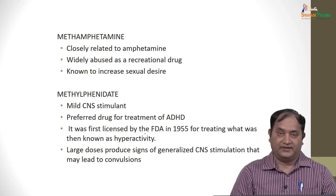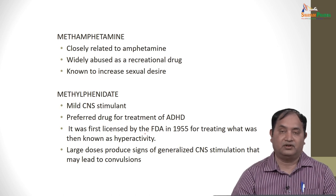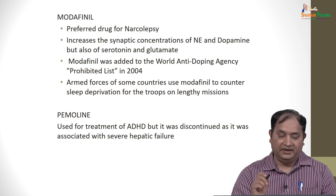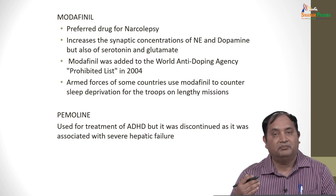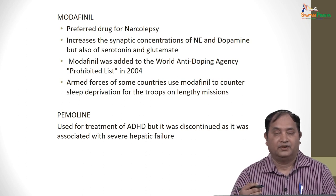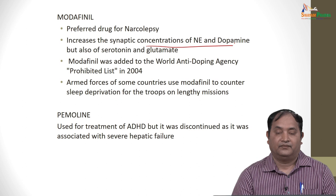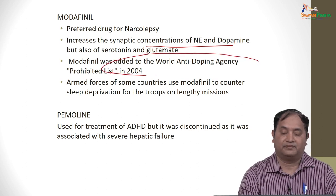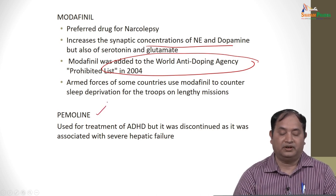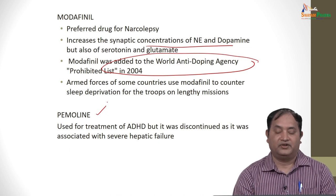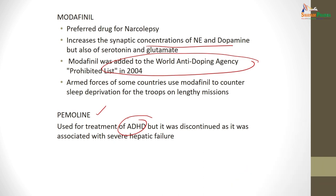Methamphetamine and methylphenidate are similar stimulants. Modafinil is preferred in the management of narcolepsy — it increases synaptic concentration of norepinephrine and dopamine. This drug has been banned in sports since 2004. Pemoline was used in ADHD but was discontinued as it causes severe hepatic failure. Tyramine is a product of tyrosine metabolism, inactive when given orally because it is metabolized by MAO. In patients on MAO inhibitors, tyramine intensification leads to increased BP.